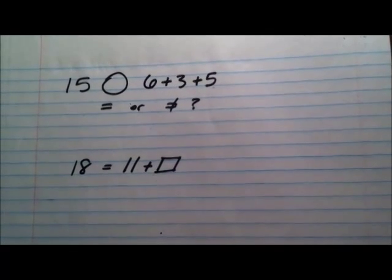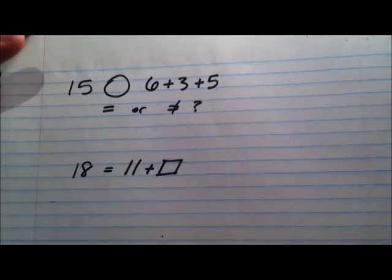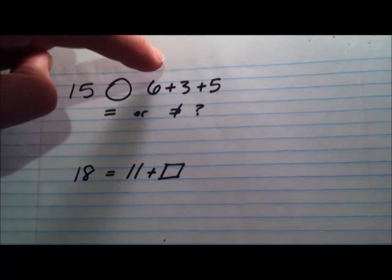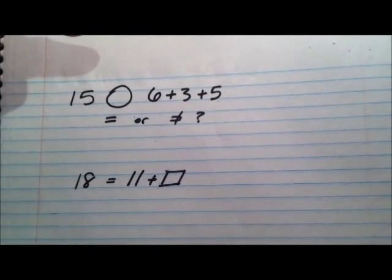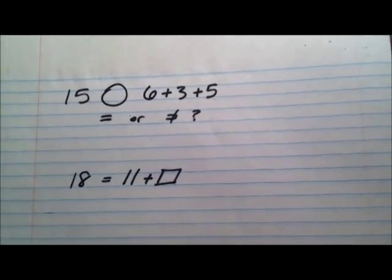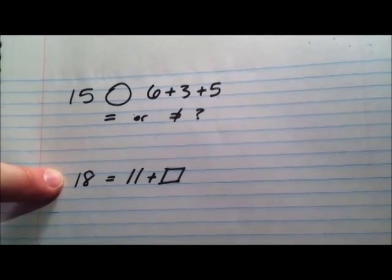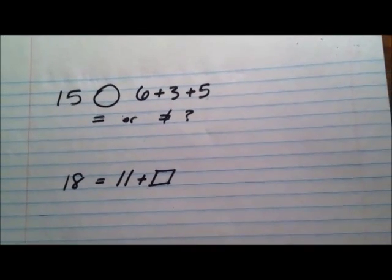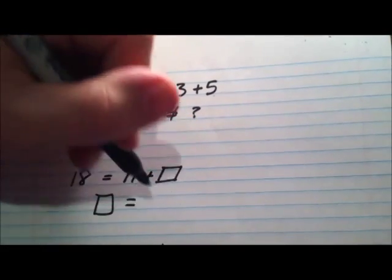Okay, so here are your exit problems. The first one is an equals or not equals problem. It says 15 is something to 6 plus 3 plus 5. So simplify this side and then tell me is it equal or not equal to 15. The second problem you get to do is you get to solve for box. We have 18 equals 11 plus box. What goes in the box? Box equals what?